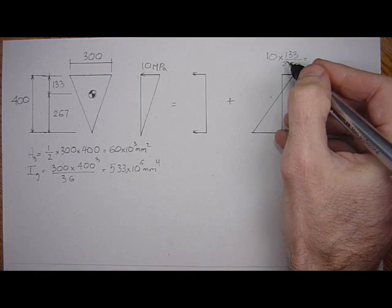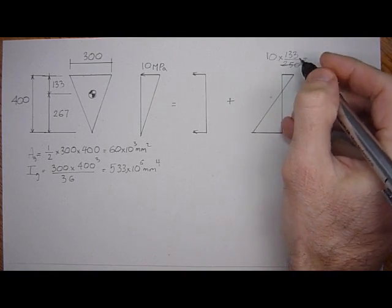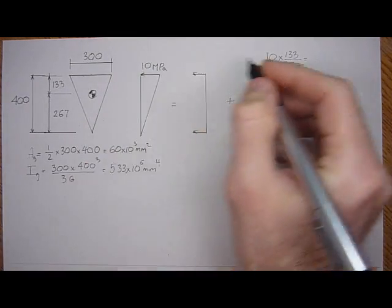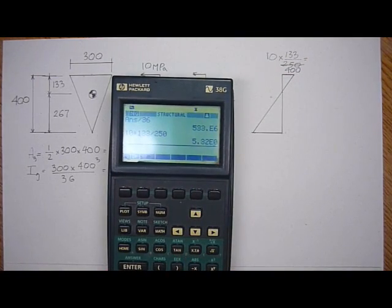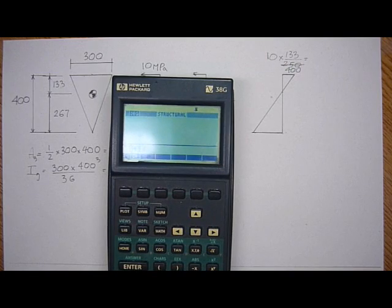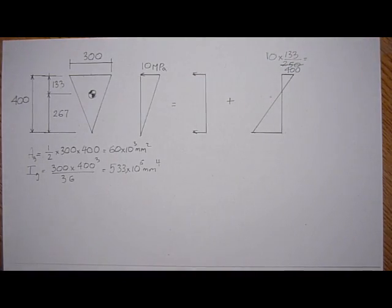Oh, it's 400. No, that's wrong. We're using a 400 deep section over 400. So it would be 10 times 133 over 400. 3.33 MPa.